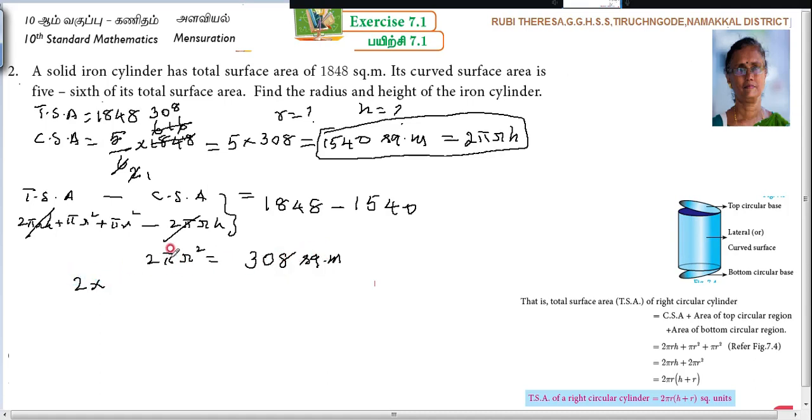Now, 2 times, in the place of π, what are you going to substitute? 22/7. Times r squared. You want to find out r only, so just write as is: 2πr² = 308. So r² = 308 divided by (2 × 22/7). The 22/7 in LHS becomes 7/22 in RHS. The 2 in LHS becomes 1/2.